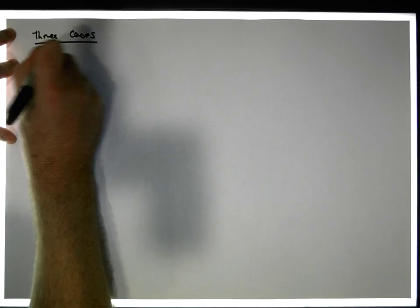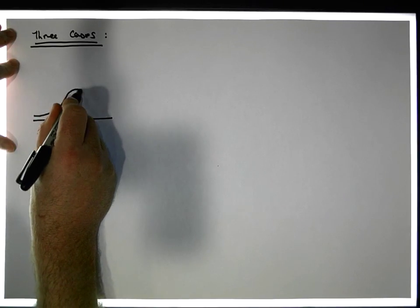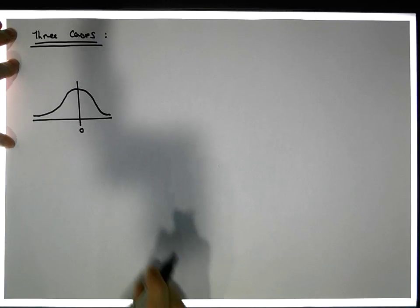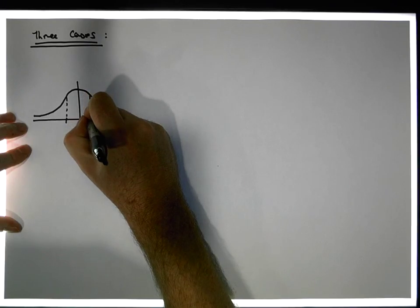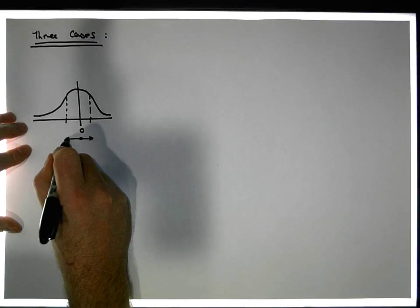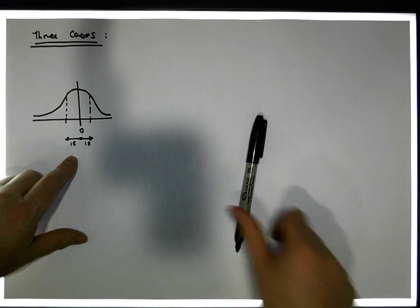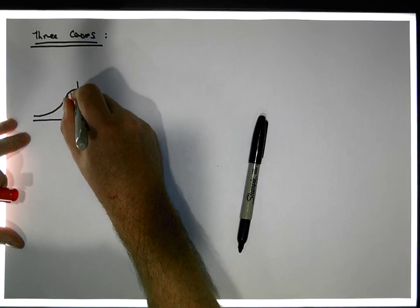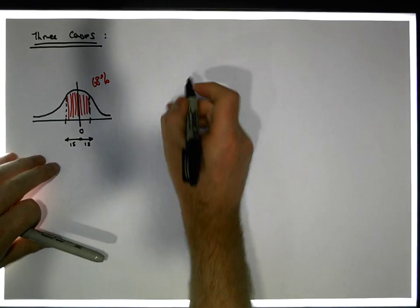We'll deal with three cases. Case one: we have a standard normal distribution centered on zero. Within one standard deviation of the mean — one standard deviation on either side — what we'd expect to find is 68% of observations. So the area under the curve within that region should be 68%.